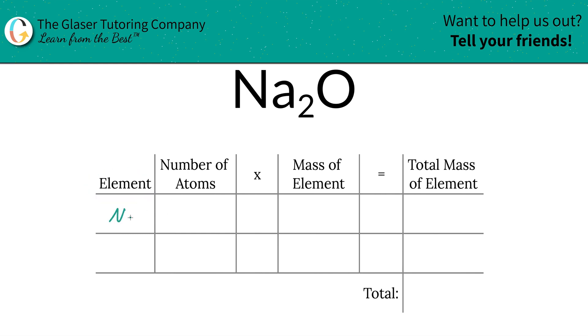So the first thing we do is write down the elements of the compounds. So we've got sodium and we've got oxygen. Next is to identify the number of atoms, and that's where the subscripts come into play. Now if there's no subscript at the bottom of the element, just put in a one.